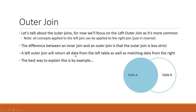A left outer join will return all the data from the left table — all the data from the left table — as well as any matching data from the right-hand side table. The key thing to note is that left join and left outer join are synonymous. A left join will return all of the data from the left-hand side table, regardless of whether there is a matching set of data on the right or not.